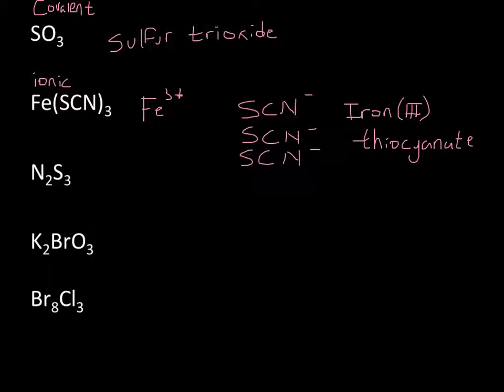All right, next in line, we have nitrogen and sulfur bonded together. Nitrogen is a non-metal, and so is sulfur. So that means this is another covalent compound. So we're going to have to use prefixes. And we have two nitrogens, and the prefix for two is di. So it's going to be dinitrogen. Nitrogen stays the same since the first element. And then we have three sulfurs. The prefix for three is tri. We don't say trisulfur, though. It's the second element, we change it to ide. So it would be trisulfide.